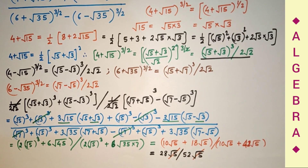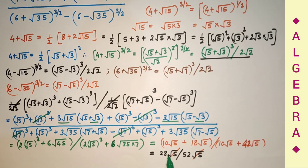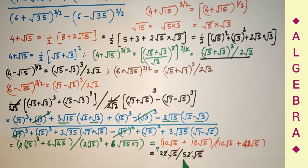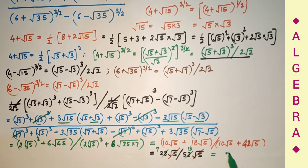The root 5 cancels from numerator and denominator, leaving 28 divided by 52. Cancelling by 4, since 4 times 7 is 28 and 4 times 13 is 52, the final answer is 7 by 13.